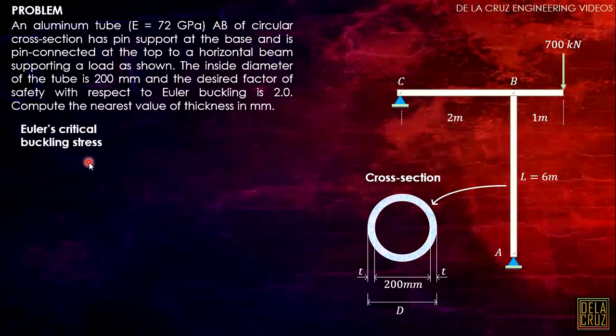Let's calculate the Euler's critical buckling stress. This is given by this formula: f_c equals pi squared E divided by the slenderness ratio (kL/r) quantity squared. Now take note that k here is based on the kind of support at endpoints of the column. In this case, the column is pin to pin support at endpoints, so our k value here is equivalent to 1.0.